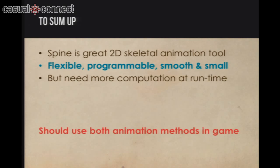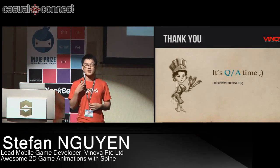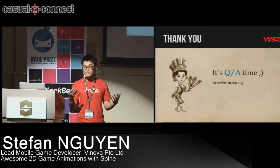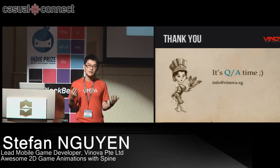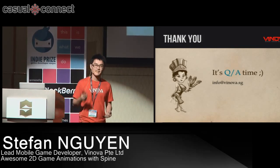My advice is that we can use both animation methods in a single game — frame-based animation for small characters, and skeletal-based animation for bigger ones with more complex animations. We don't have to choose; just use the best of both worlds. To sum up: Spine is a great 2D skeletal animation tool for games, providing flexible, programmable, smooth, and small-in-size animations, though it requires more computation at runtime. The conclusion is that we should use both animation methods in a single game. If you want to see Spine animations in action, visit our booth in the Indie Showcase where we're demonstrating Ultimate Arrow, which uses Spine animation extensively. Thank you all for listening.